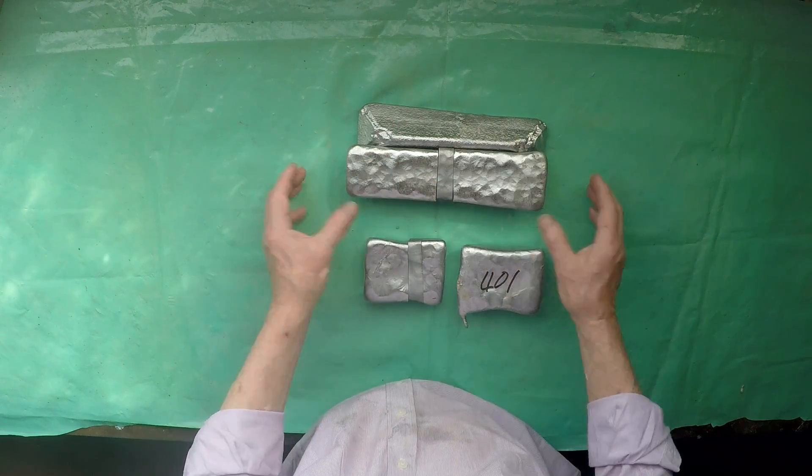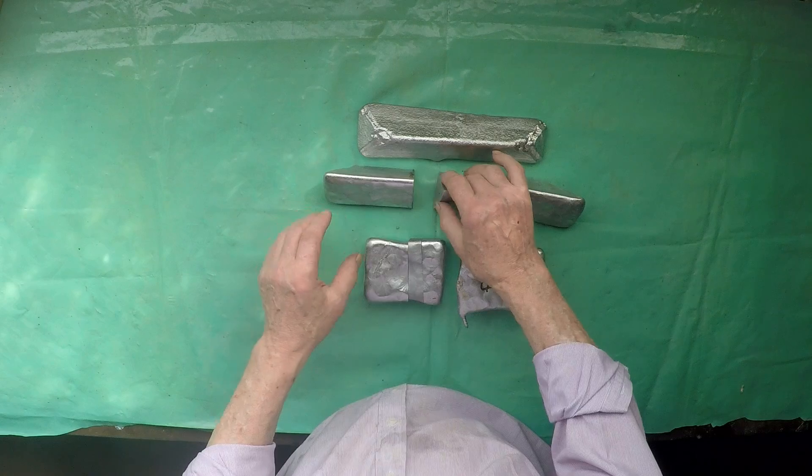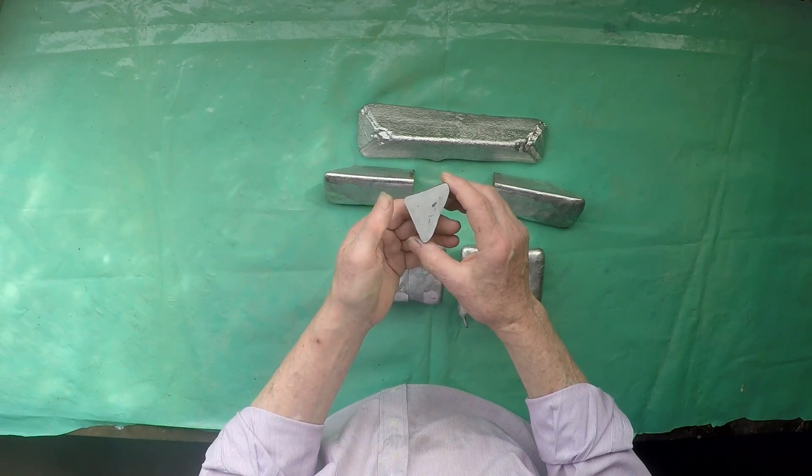So what I did, I got one of the ingots that showed this quite badly, this one in fact, and I cut this slice out of it and I did some work on polishing and etching this sample.